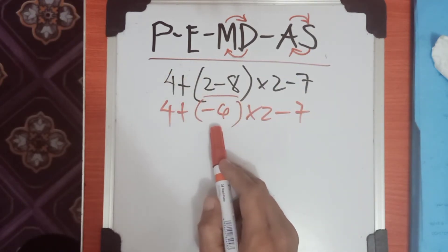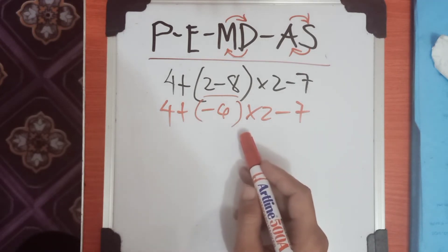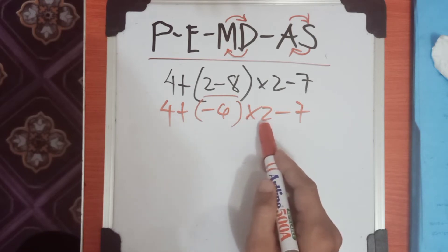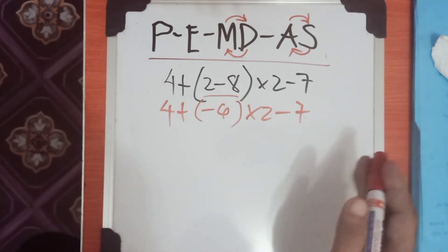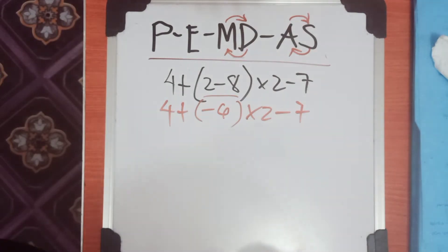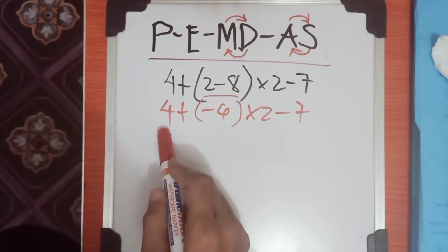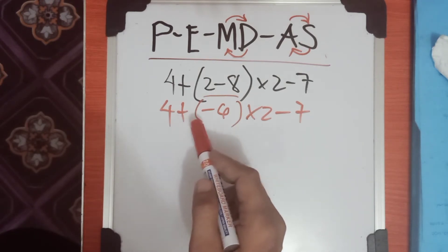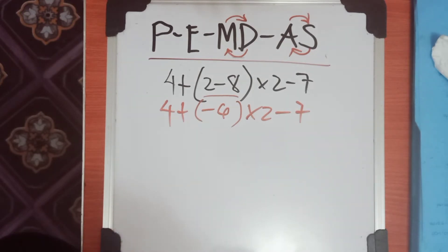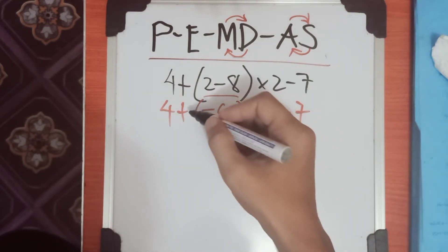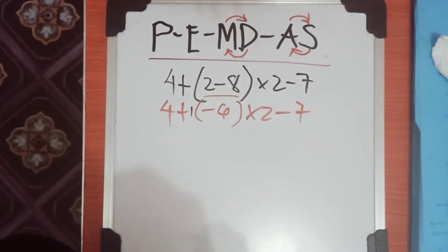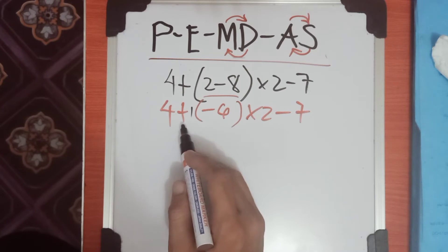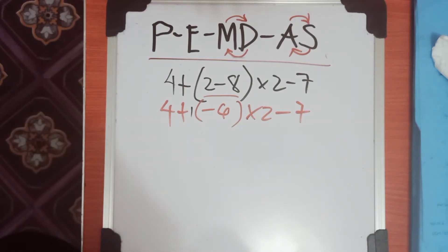In the order of operations we solve from left to right. We cannot apply the 'times 2' to this parenthesis first. Also, the number 4 cannot be solved into the parenthesis because there is a positive sign in between. In algebraic expression, every number can be multiplied by 1, so we put an imaginary 1 here, since there is a positive or negative sign present.